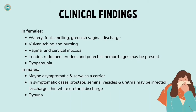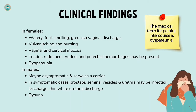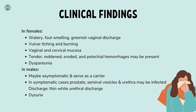Clinical findings in females: a watery, foul-smelling, greenish vaginal discharge is seen. Vulvar itching and burning are present. The vaginal and cervical mucosa is tender, reddened, eroded, and potential hemorrhage may be present. There is also dyspareunia.